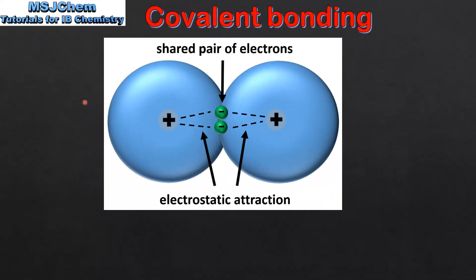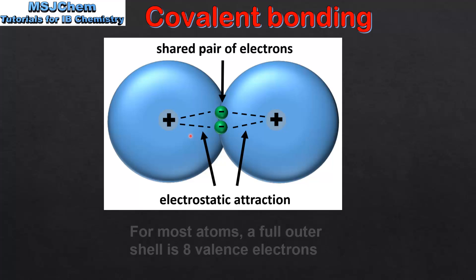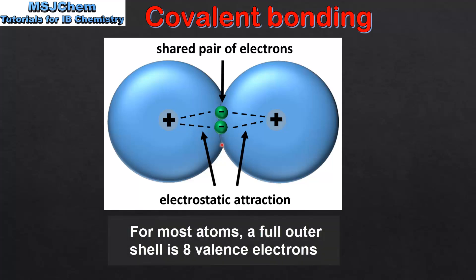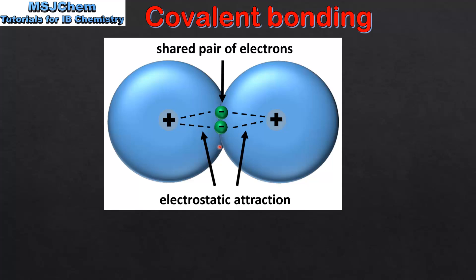Next we look at the formation of a covalent bond between two hydrogen atoms in a molecule of hydrogen. When two hydrogen atoms bond they form a single covalent bond. The covalent bond is the electrostatic attraction between the positive nuclei and the shared pairs of electrons. By sharing electrons each hydrogen atom gains a full outer shell, which in this case is two electrons. It is for this reason that covalent bonding is often described as the sharing of electrons.